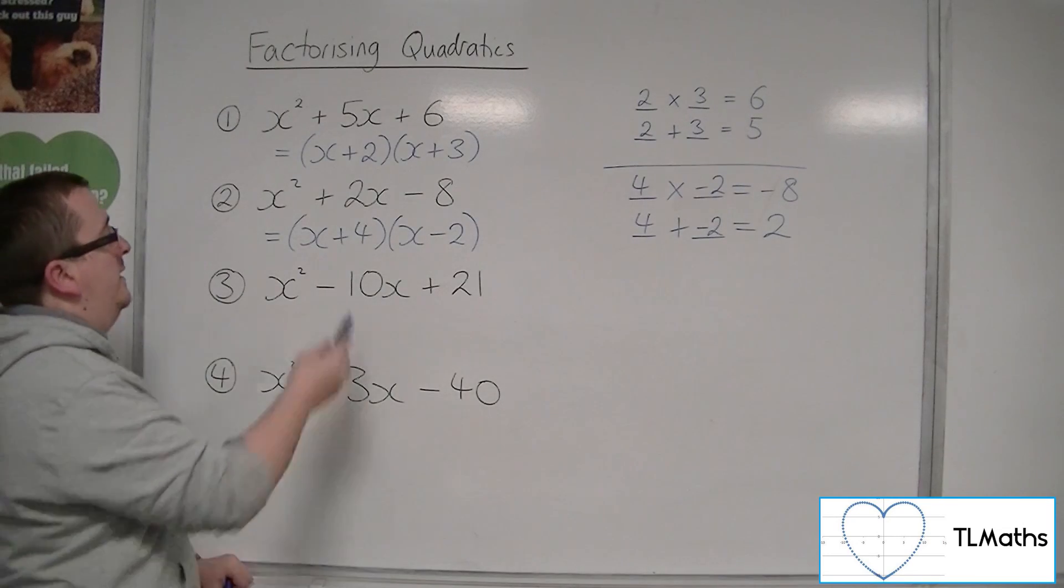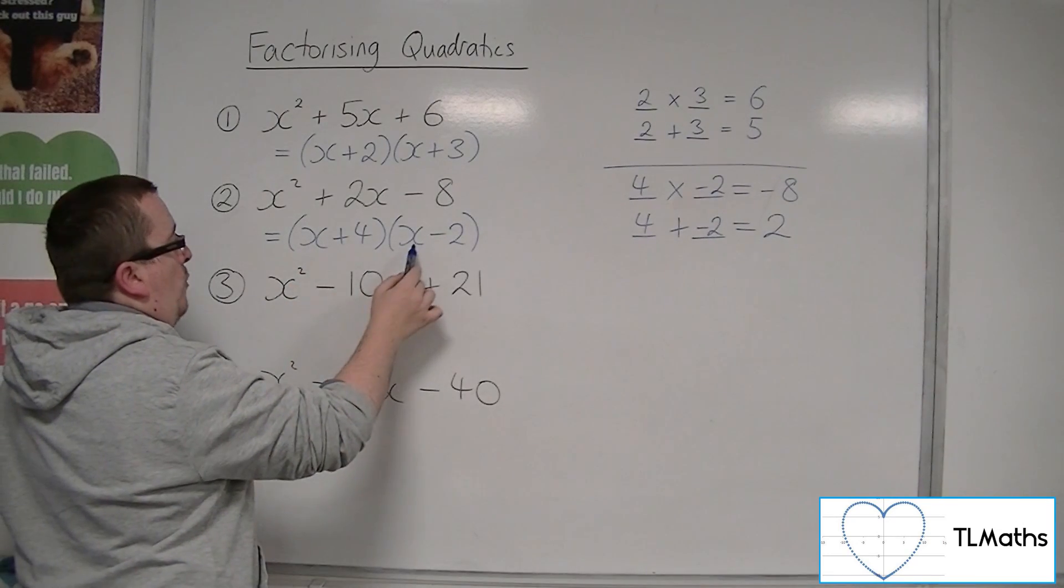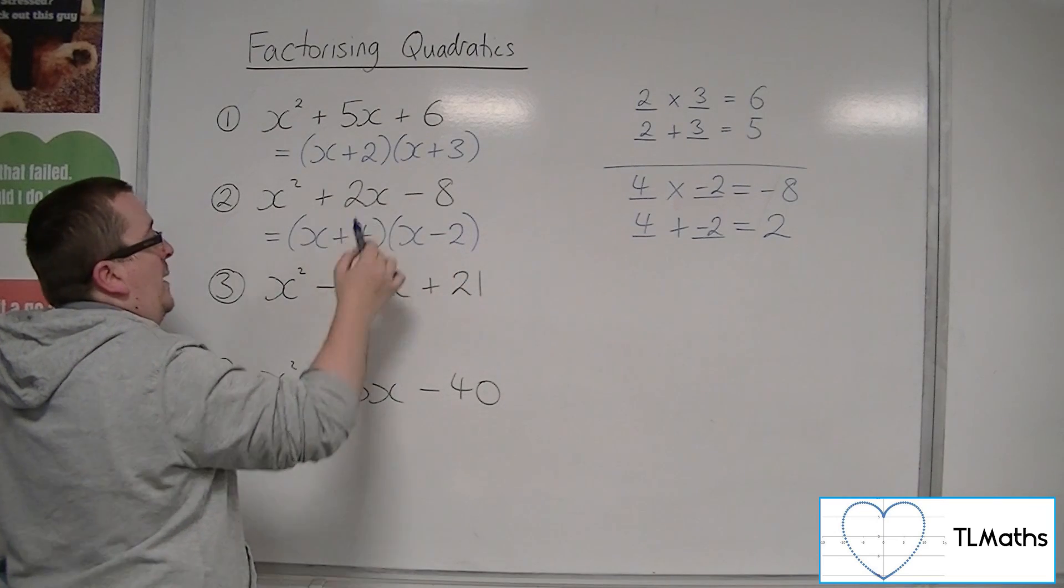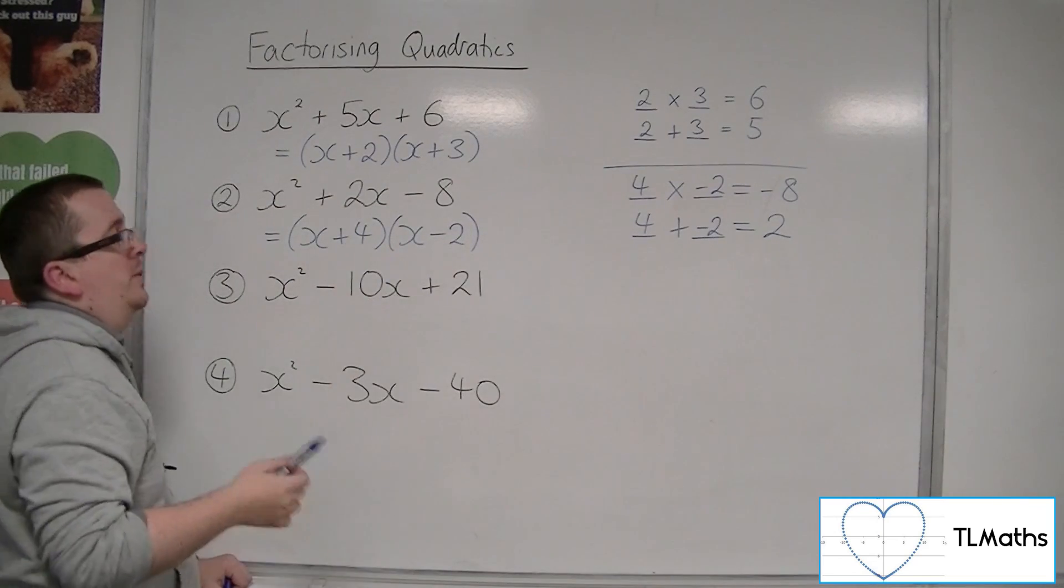And of course we can double check. x squared, 4x, take away 2x gets me the 2x, and 4 times minus 2 gets me the minus 8.